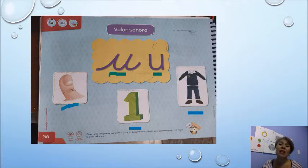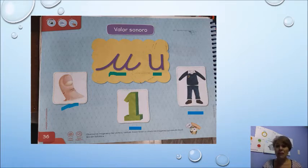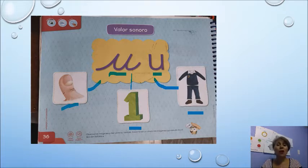Aquí al lado del 1 tenemos un uniforme, así como el que ustedes usan cuando van a la escuela. Muy bien chicos. Como ya identificaron que estas imágenes empiezan con la vocal U, van a elegir una crayola del color que quieran y van a unir cada imagen con la vocal U porque inician con la vocal U.